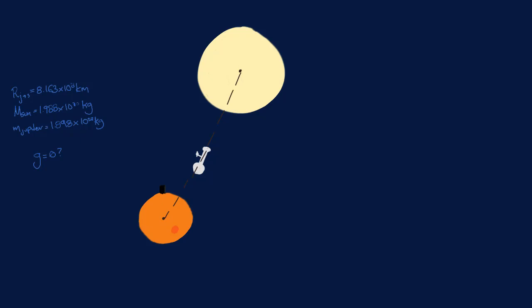As we've discussed, the field strength of an object is equal to the universal constant of gravitation multiplied by the mass divided by the distance squared. So let's set the field strength of the Sun equal to the field strength of Jupiter.